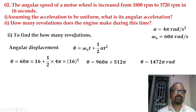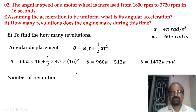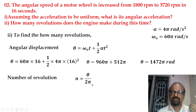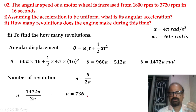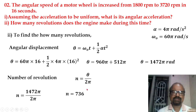Our problem asks for the number of revolutions. Angular displacement in radians is divided by 2π since one revolution equals 2π radians, to get the number of revolutions during this time.